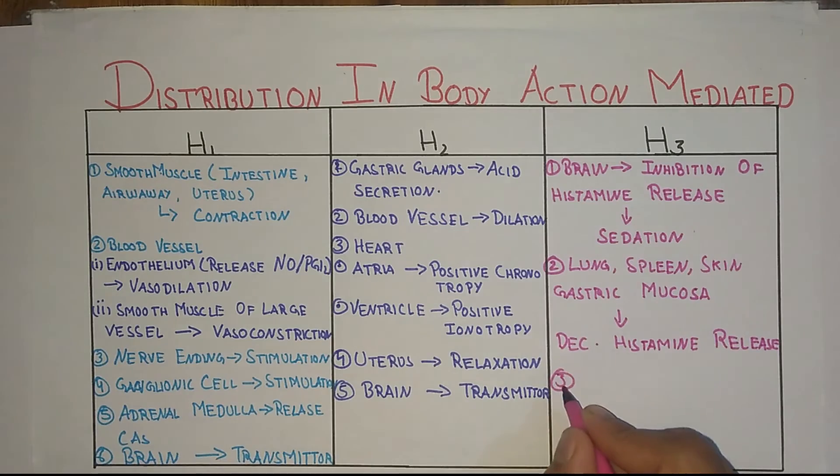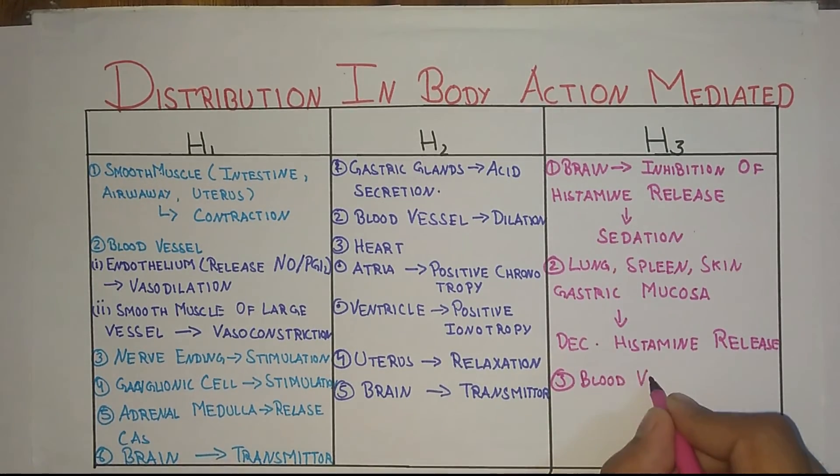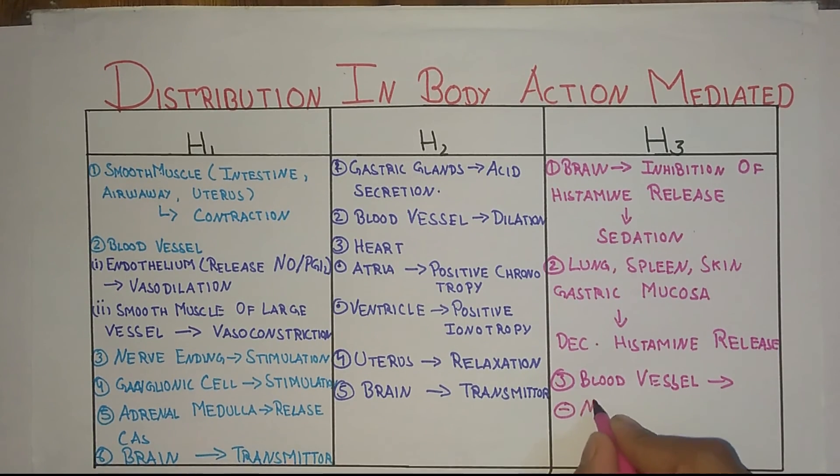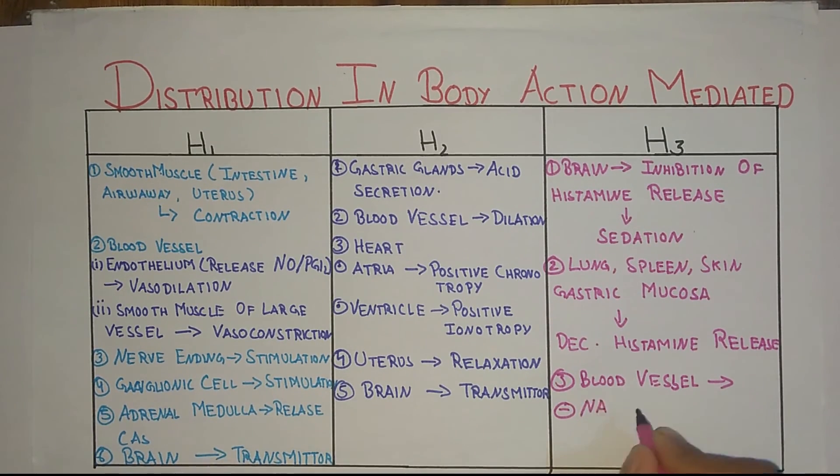Next, H3 is present in blood vessels. In blood vessels it will inhibit noradrenaline, which ultimately causes vasodilation.